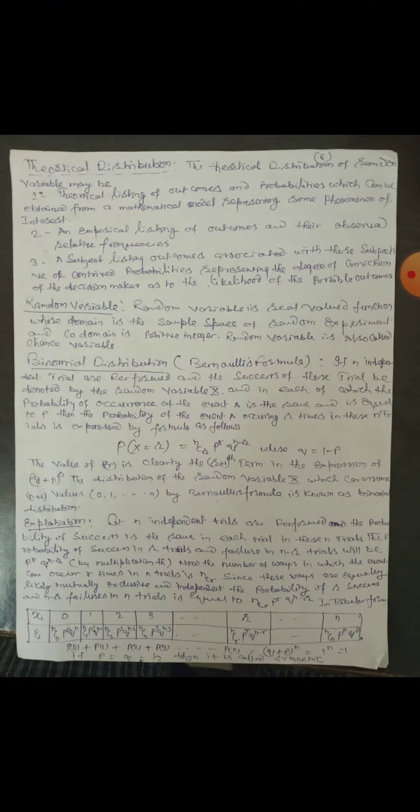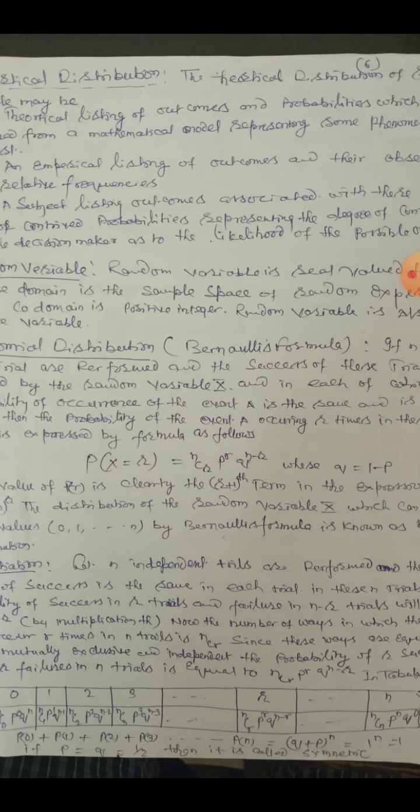Explanation: Let N independent trials are performed. The probability of success is the same in each trial. In these N trials, the probability of success in R trials and failure in N minus R trials will be P^R × Q^(N-R) by multiplication.